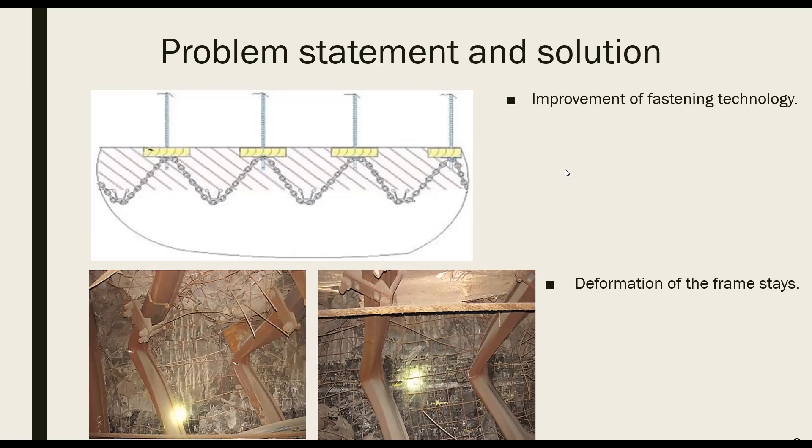It is also recommended to set predominantly horizontally directed roof bolts, strengthening the border lateral rocks. In addition, it is expedient to tie end tail joints of the roof bolts with the frame prop stays, which will effectively restrict the convergence.